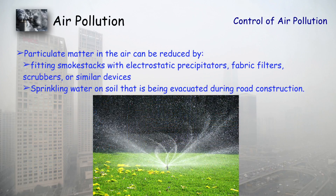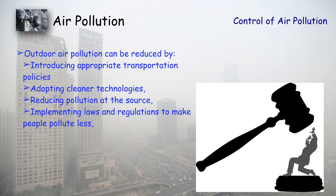Particulate matter can be reduced by filtering — using filters, electrostatic precipitators, scrubbers, and other methods. Sprinkling of water also helps avoid dust particles. Finally, we can control pollution by making and enforcing strict laws. There are laws related to vehicle pollution, but people are not following them, so we must properly punish violators.